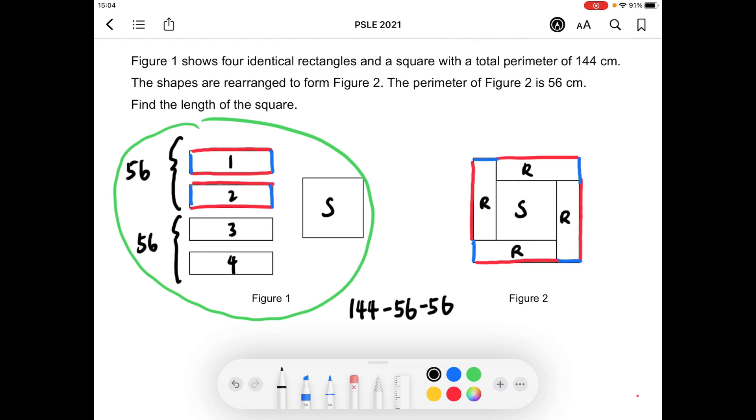Since they want to find the length of the square, we can divide that by 4. We will get 8 centimeters, which is the answer to this question. The length of the square is 8 centimeters.